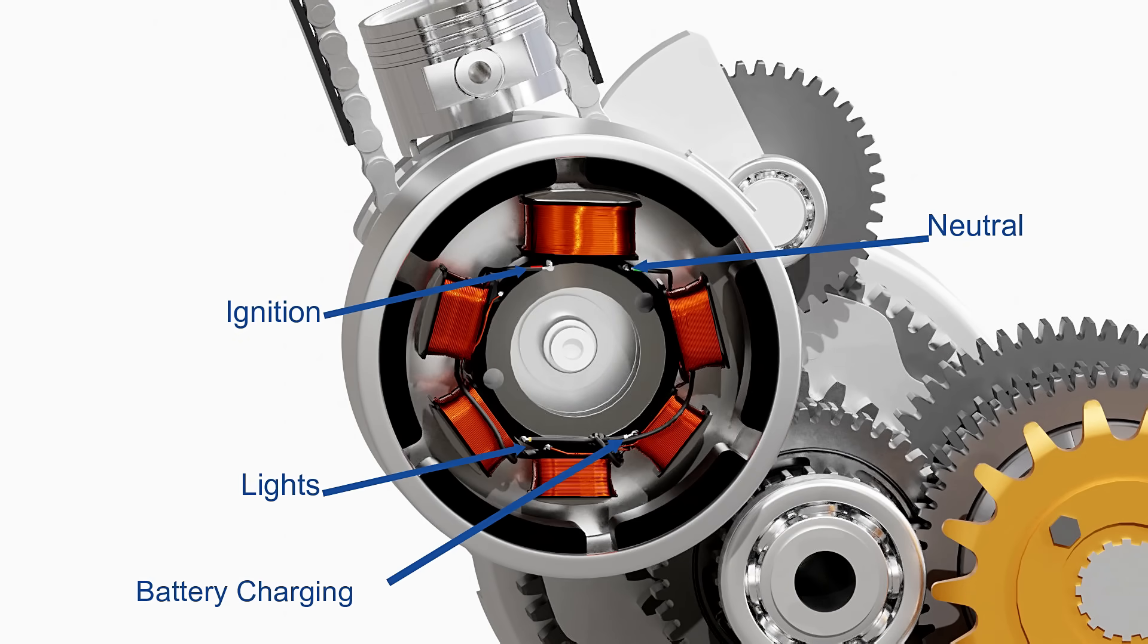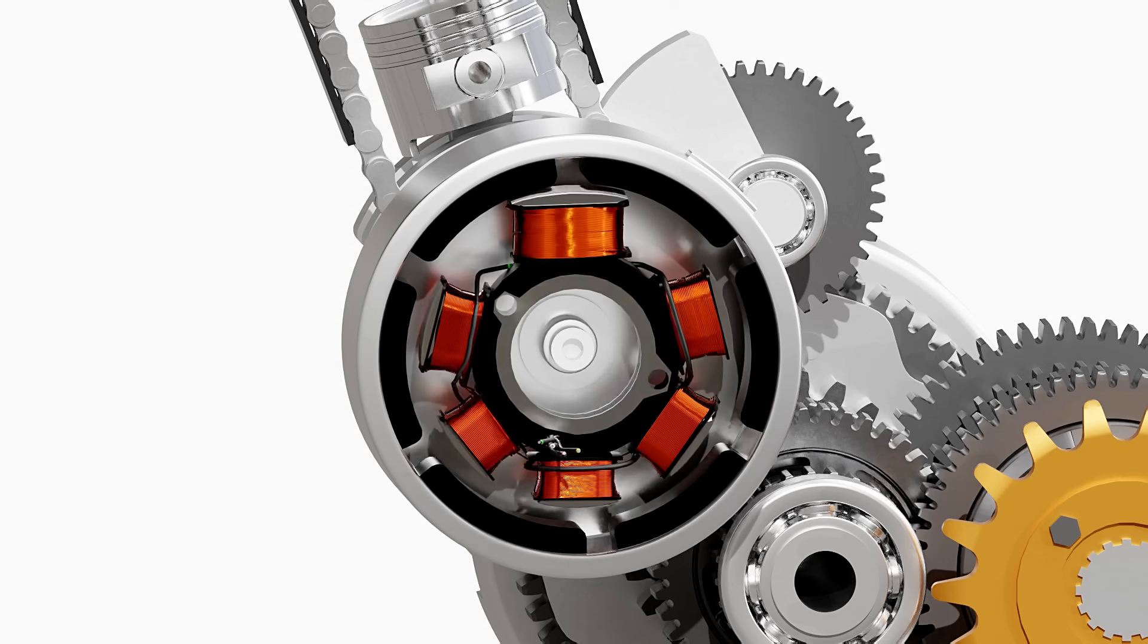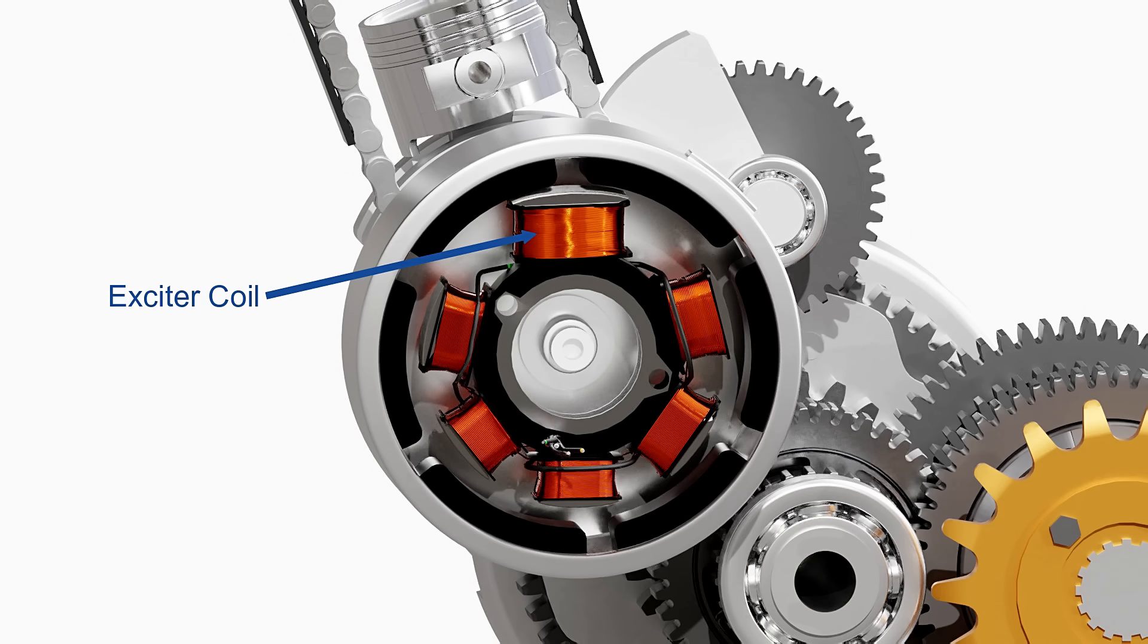Each output from the stator has different purposes, as shown here. The output for the ignition purpose is received from the exciter coil. This coil has a denser winding of thinner wire than the other coils to produce higher voltage for the ignition.